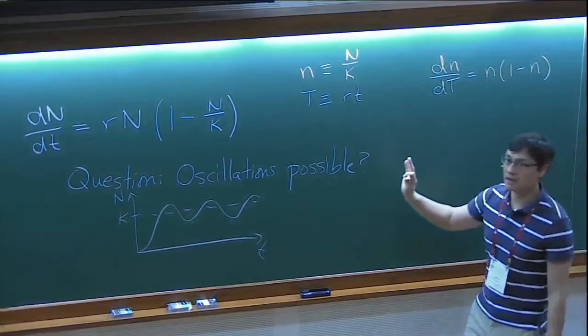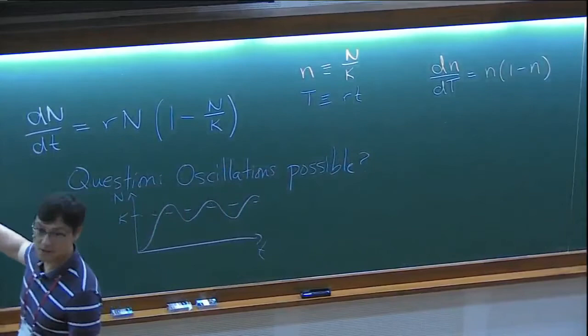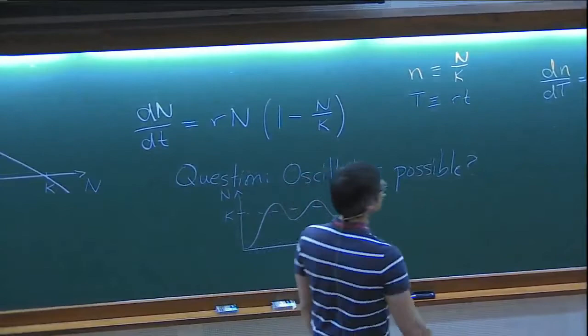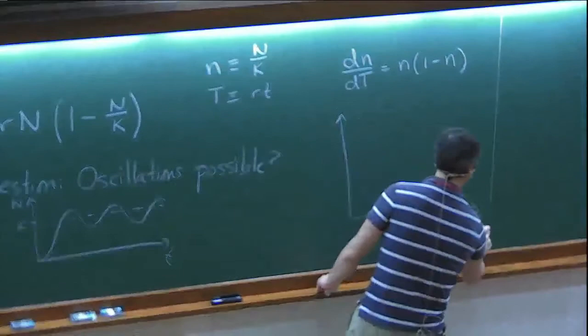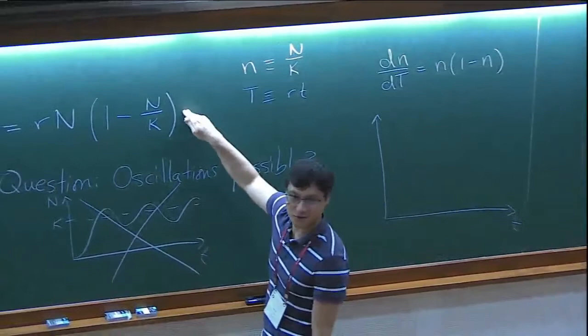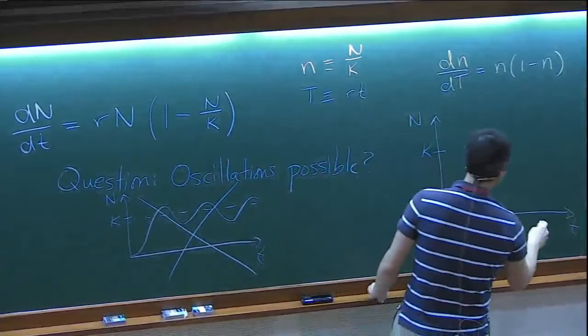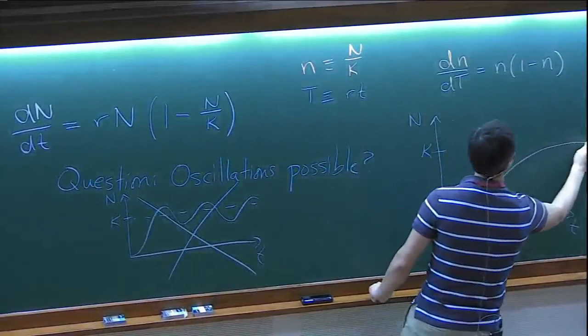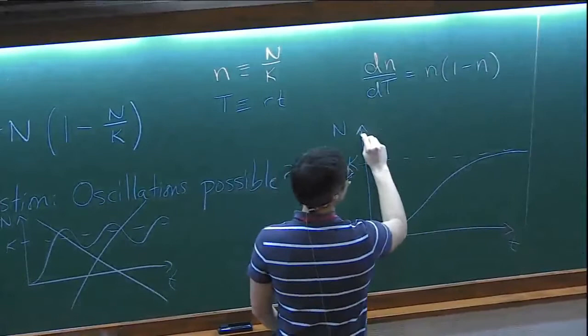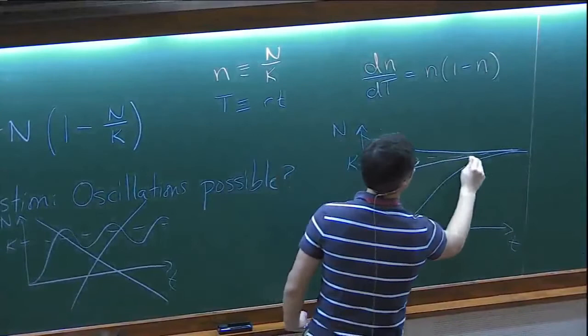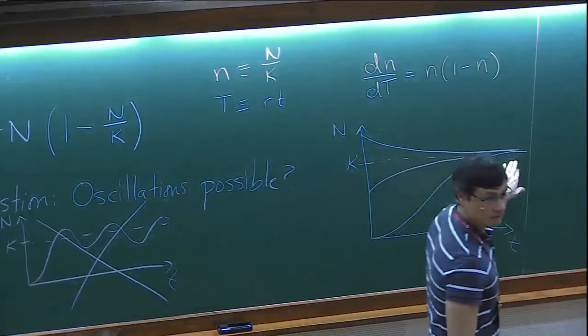This is a simple model for population growth that leads to a stable equilibrium at the carrying capacity. Looking at N as a function of time: starting below K, the population grows exponentially and then smoothly approaches K. Starting above K, it decays down to K. All trajectories go smoothly to this equilibrium population size — very simple behavior.